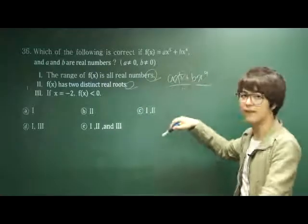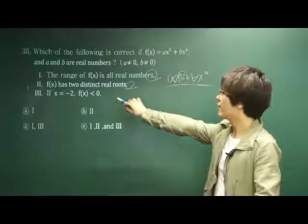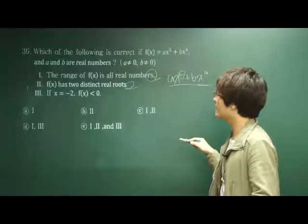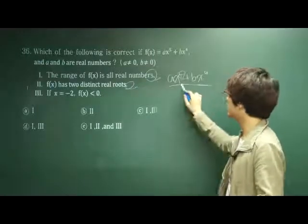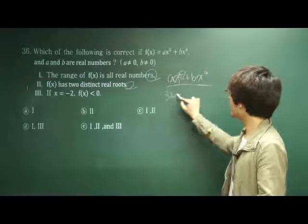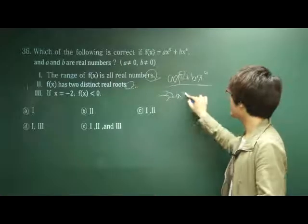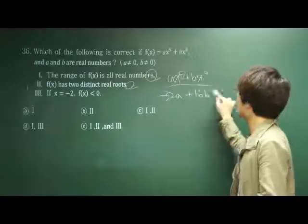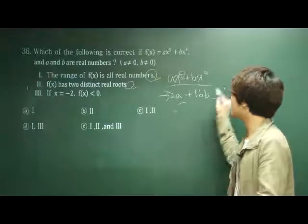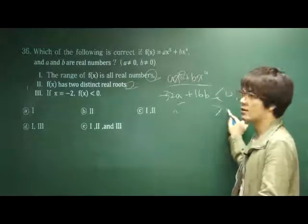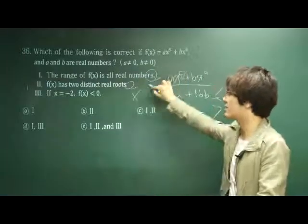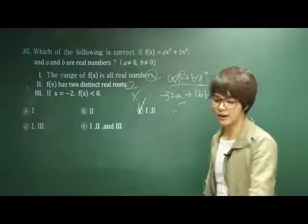Statement two: f(x) has two distinct real roots. It should actually have five at least. Third statement: If x equals negative 2, f(x) is less than 0. Put negative 2 in place of x, it is negative 32a plus 16b. But we don't know the value of a and b, so we cannot say this is less than 0 or greater than 0 or even equal to 0. The third statement is not true. Only first and second are true. C is our correct answer.